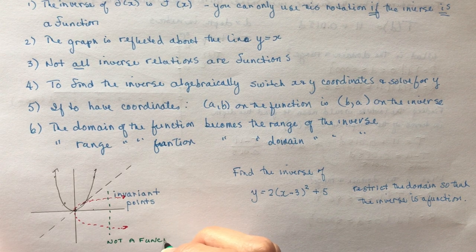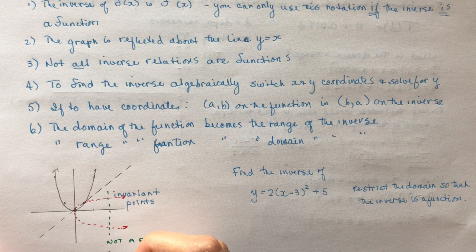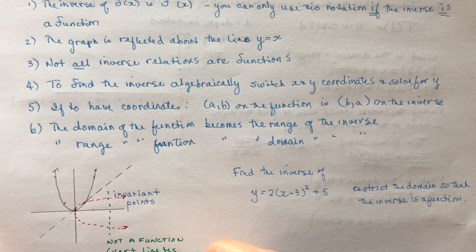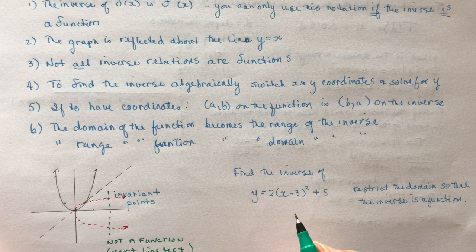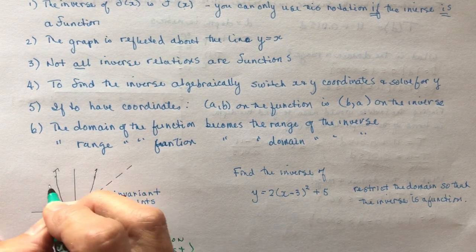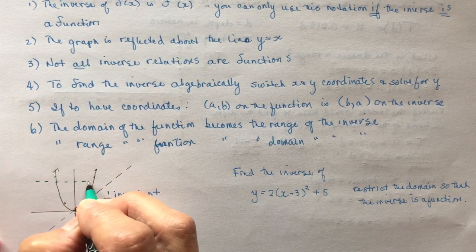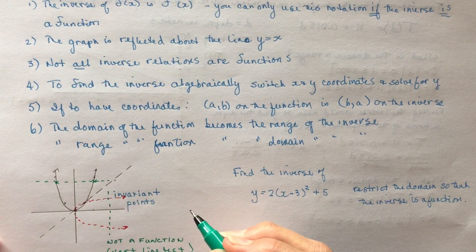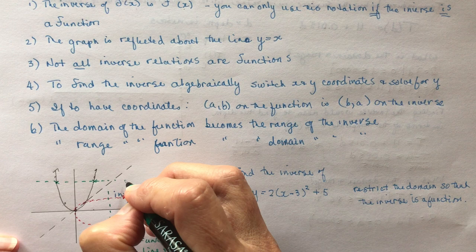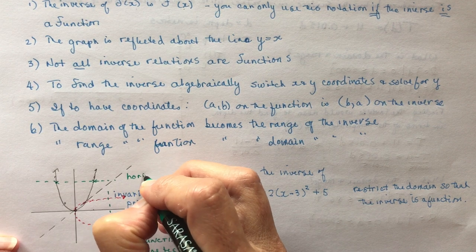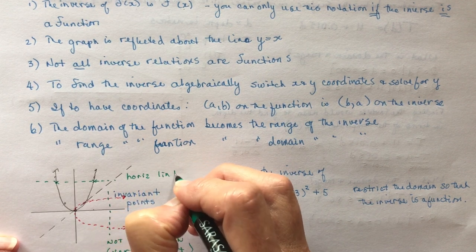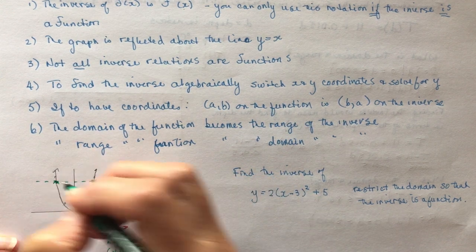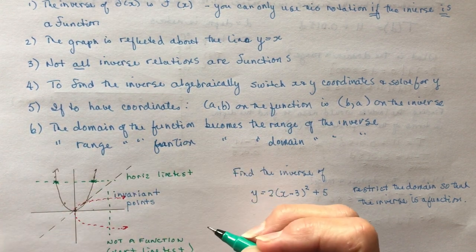There's also something called the horizontal line test. This would be our vertical line test. A horizontal line test kind of just saves you from drawing it. It says if you draw a horizontal line across a function and it crosses at more than two points, then the inverse will not be a function. So this would be the horizontal line test. We crossed in two places, so the inverse would not be a function.